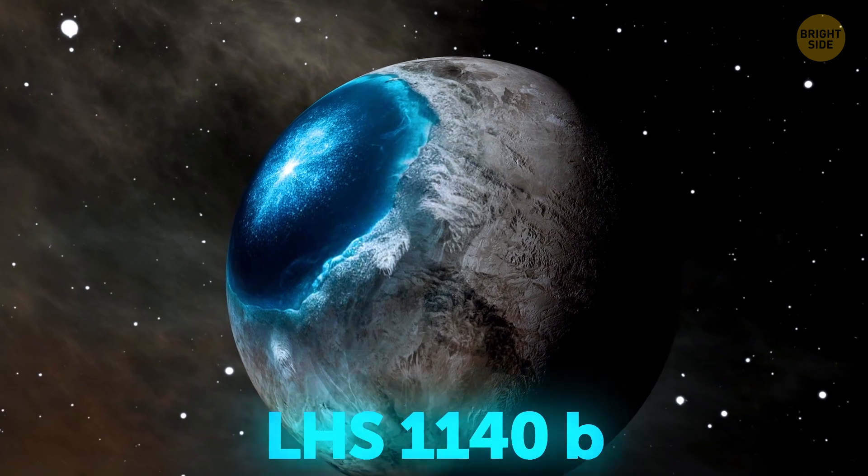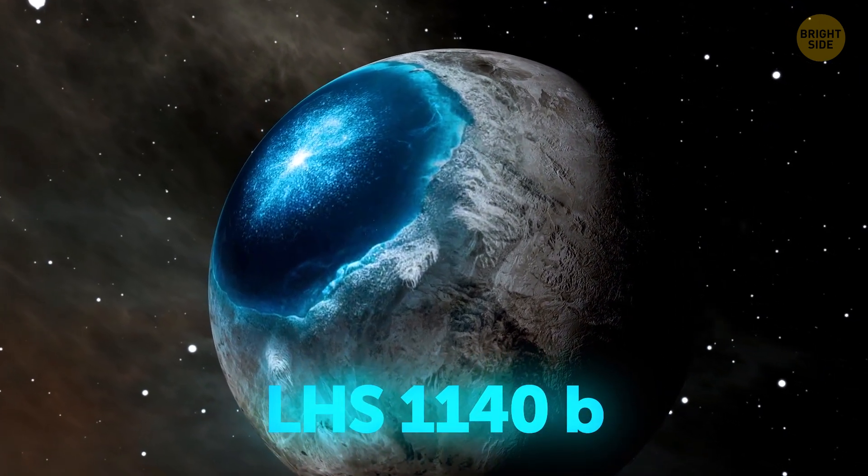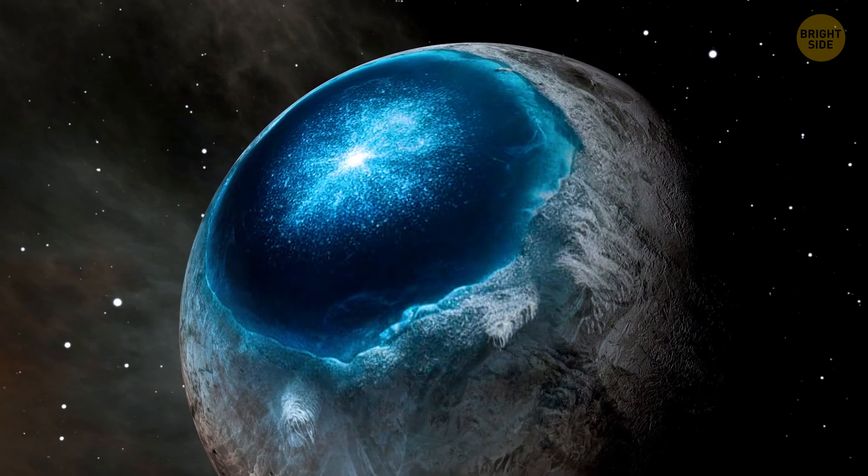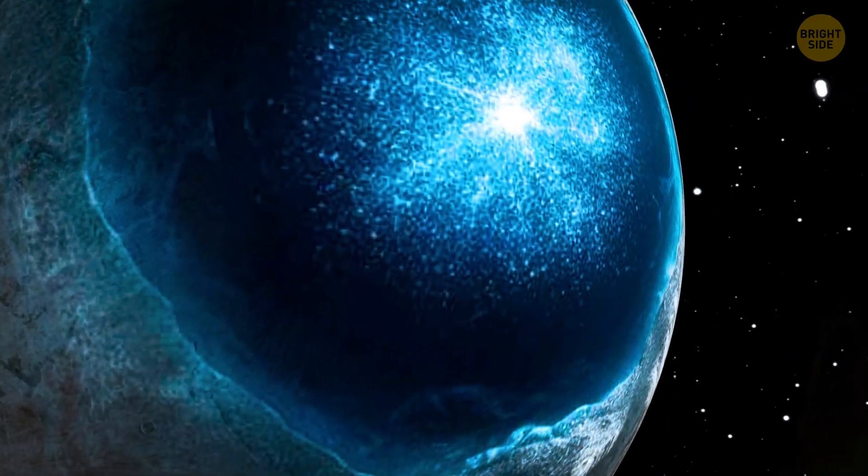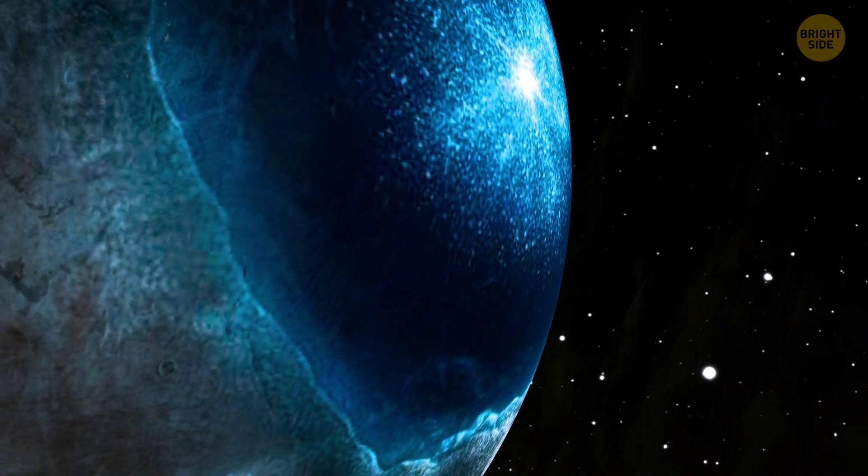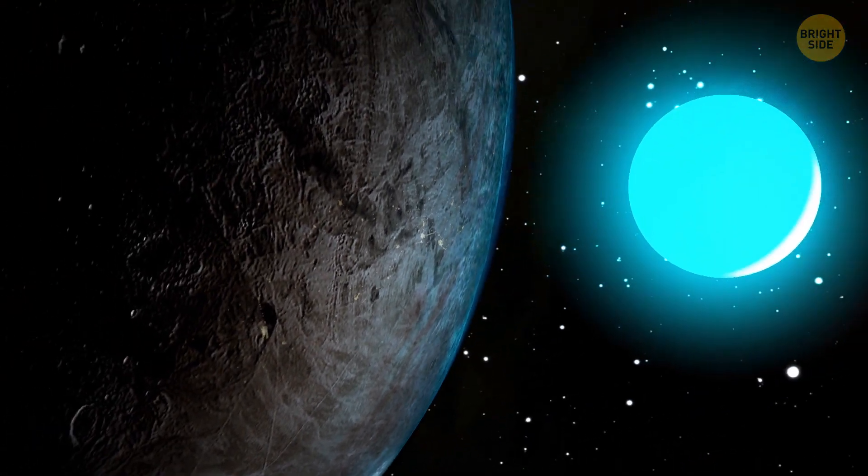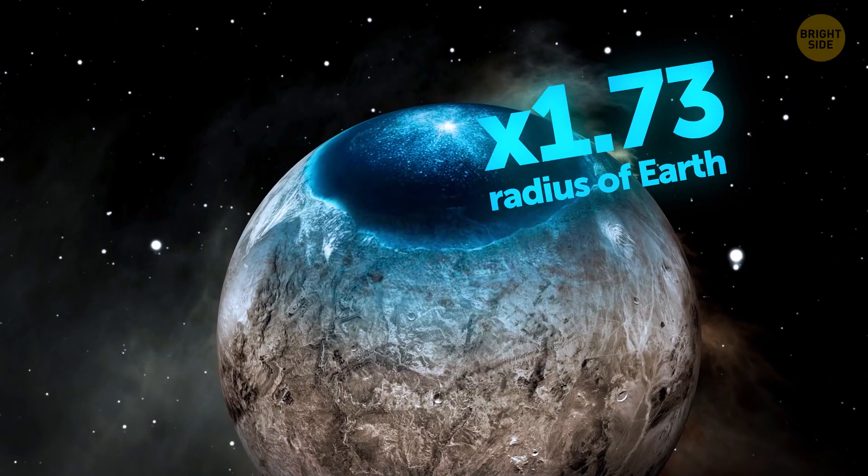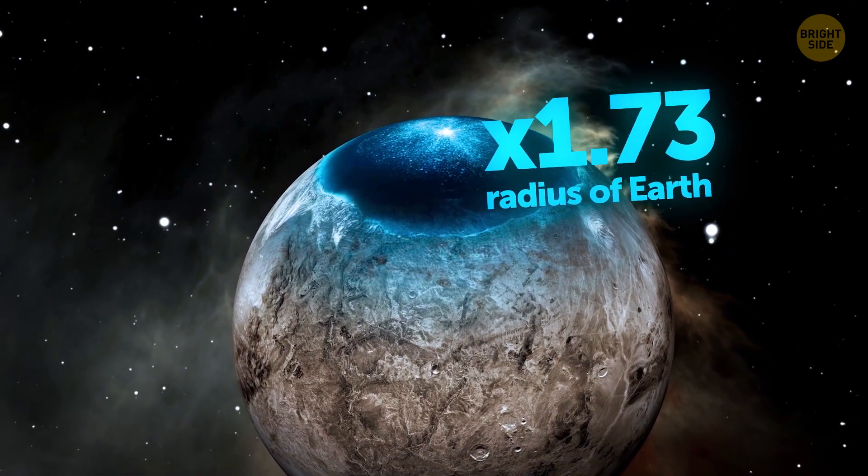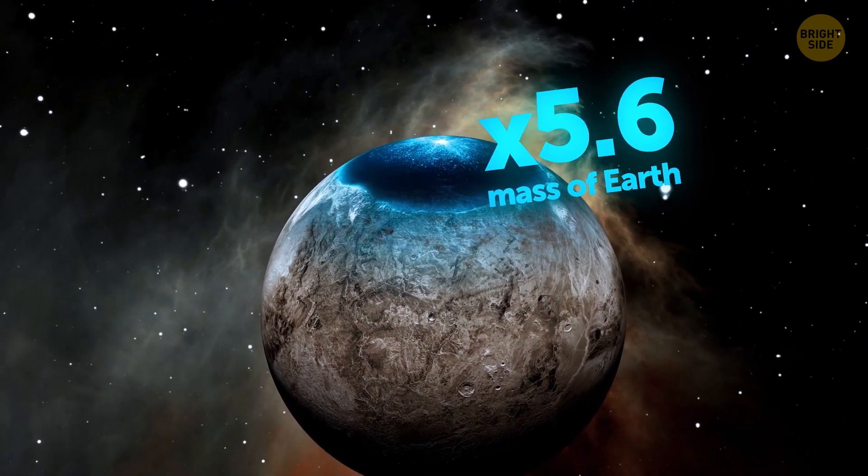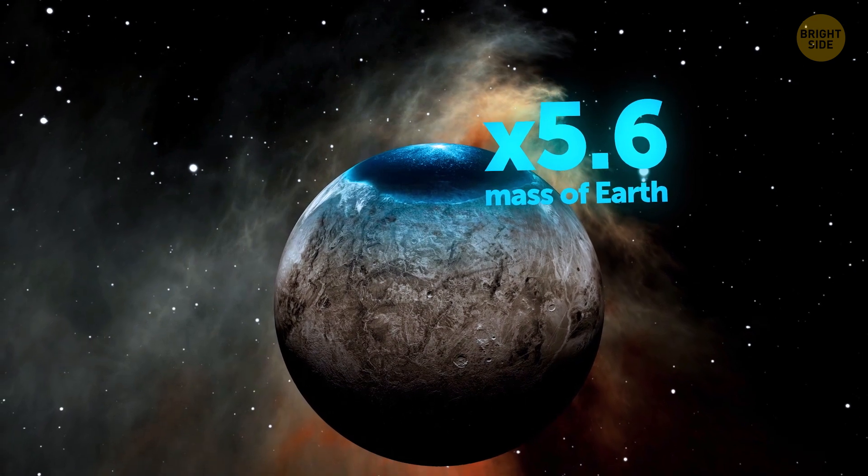The exoplanet is called LHS 1140b, and it shows signs of having a global ocean capped in ice. It's that very Iris, a huge region around 2,500 miles across, which is constantly gazing at its host star. The planet has a radius of about 1.73 times the radius of Earth, and is 5.6 times as massive as our home planet.